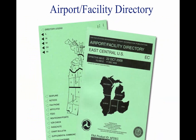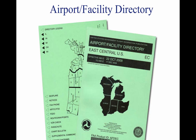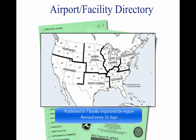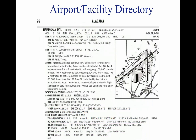The AFD provides the most comprehensive information on a given airport. It contains information on airports, heliports, and seaplane bases that are open to the public. The AFD is published in seven books, which are organized by regions and are revised every 56 days. The AFD is also available digitally at www.naco.faa.gov. This figure contains an excerpt from a directory. For a complete listing of information provided in an AFD and how the information may be decoded, refer to the directory legend sample located in the front of each AFD.